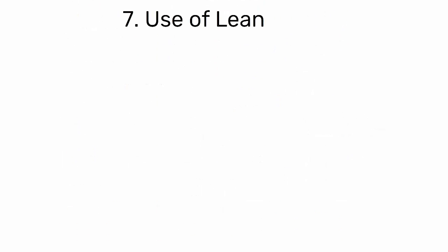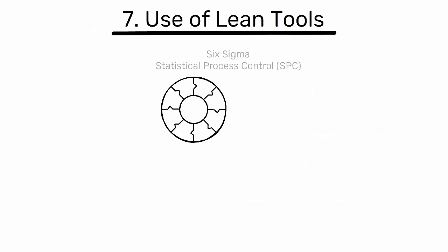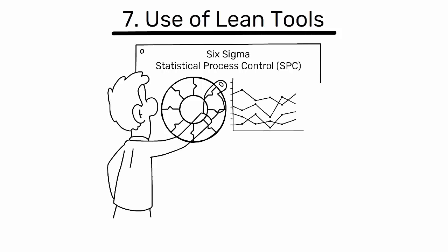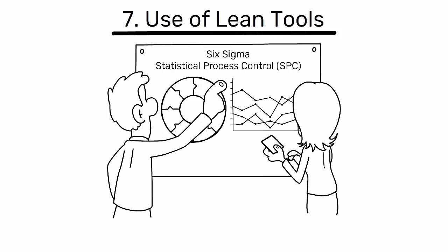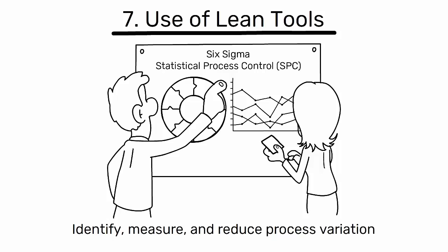7. Use of lean tools: tools like Six Sigma and Statistical Process Control (SPC) can help identify, measure, and reduce process variation.